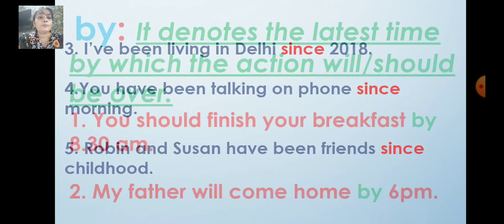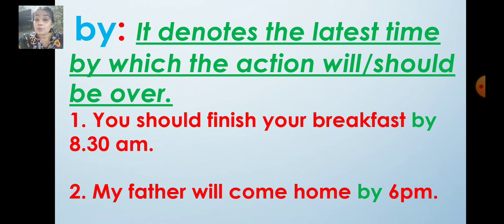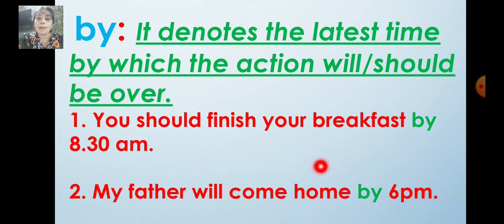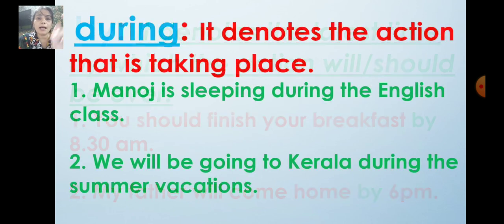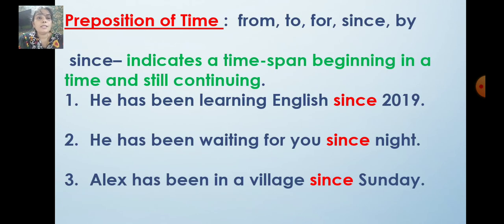Now 'by' — it denotes the latest time by which the action will or should be over. You have to complete your work by 6 o'clock. You have to finish your homework by 9 o'clock. You should finish your breakfast by 8.30 a.m. My father will come home by 6 p.m. — by 6 p.m. he will be there at home; it is not continuing. So now we have learnt the usage of from, to, for, since, by.